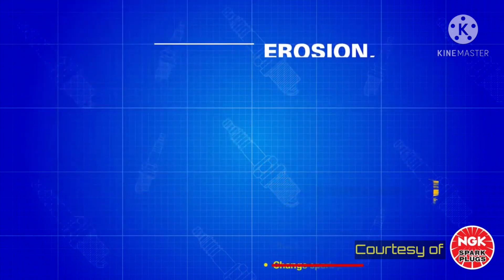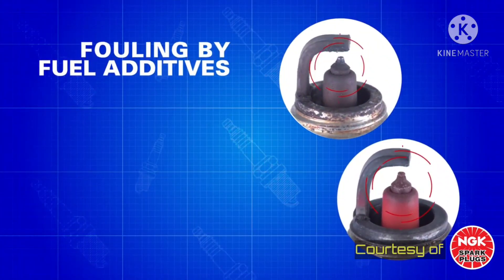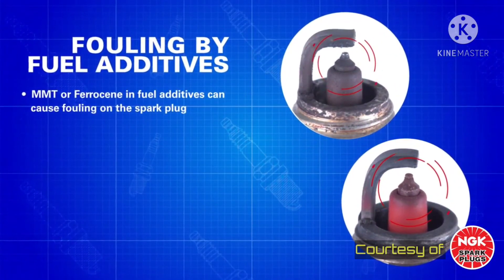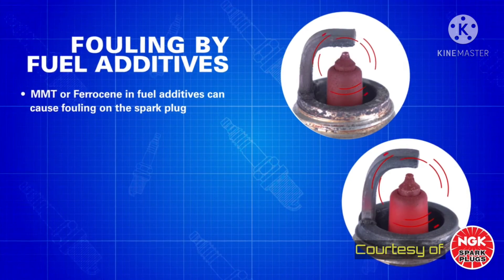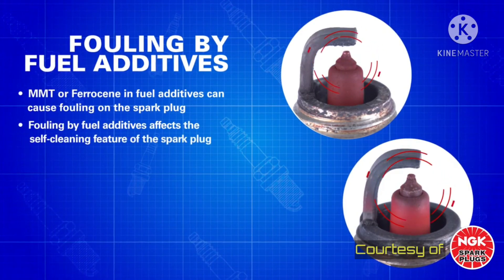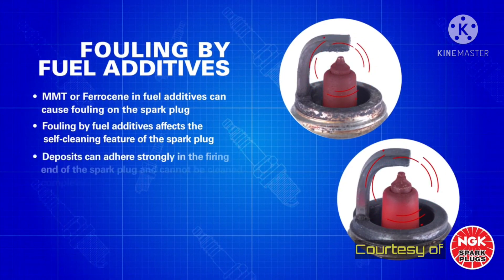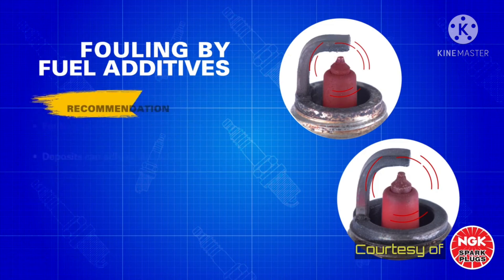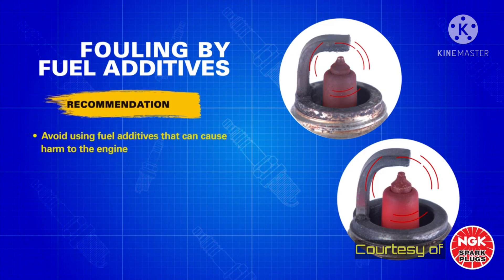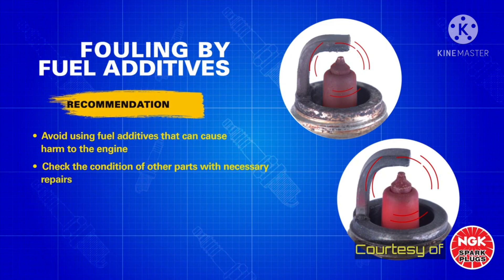Fouling by Fuel Additives. Using fuel additives to increase the octane rate of gasoline can cause fouling on the spark plug. Additives like MMT or ferrocene block the self-cleaning feature of the spark plug even when the temperature of the spark plug rises. Avoid using fuel additives that can cause harm to the engine, check the condition of other parts, replace if necessary, and replace the spark plug.